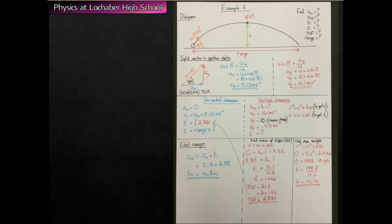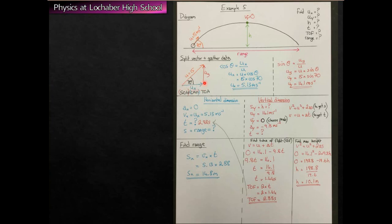My working starts with a diagram. We draw the parabolic path, mark the peak where vertical speed is zero, and label the range and time of flight. For part one, we use sine and cosine to split the 15 m/s at 70 degrees into horizontal and vertical components. Then we constrain the problem by focusing on the segment from launch to peak, where we know the final vertical speed is zero, the initial vertical speed, and the acceleration.